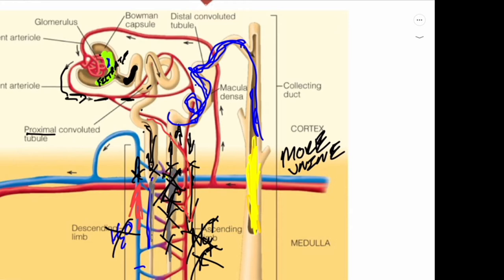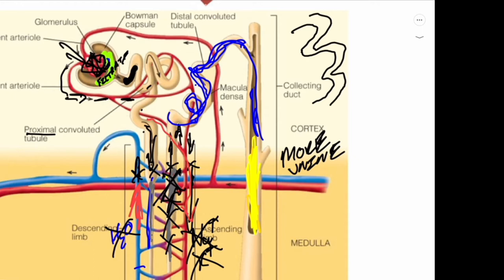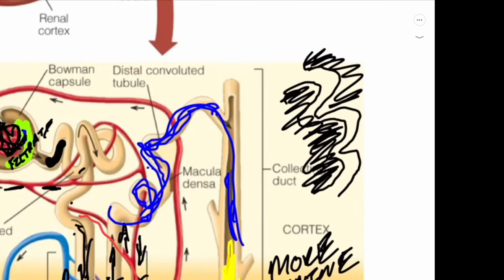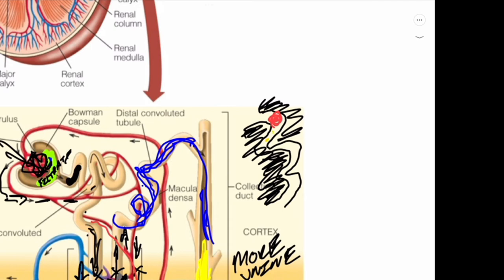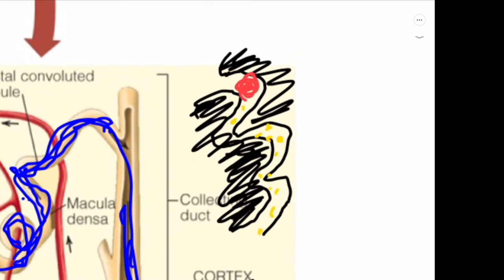The glomerulus is a complicated knot or snarl of blood vessels covered in little cells that have finger-like projections along them, and they wrap into each other. In between the projections is where your red blood cells are going to get trapped, but all your filtrate, some of your glucose, proteins, sodium, potassium — all of that is going to leak through. Your red blood cells will be too big and won't be able to leak through, so they'll stay in the blood. This is truly a filter.